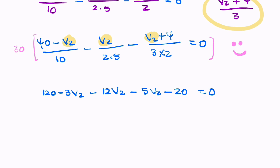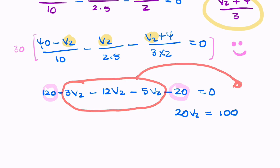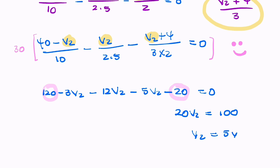And now, we're getting closer and closer to a final solution. So, 120 minus 20 is 100. And 3, 12, and 5 give me 20. So, it's 20V2 equals 100. I've ignored the negative signs. So basically, I've taken these negatives to the other side to give me that. And that gives me V2 equals 100 divided by 20, which is 5 volts.